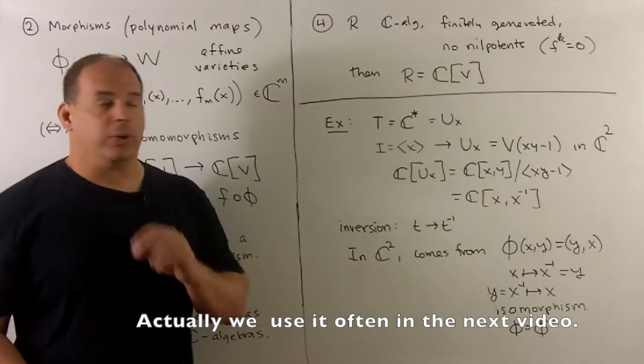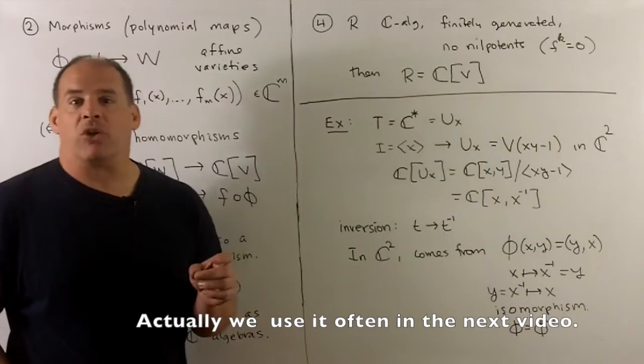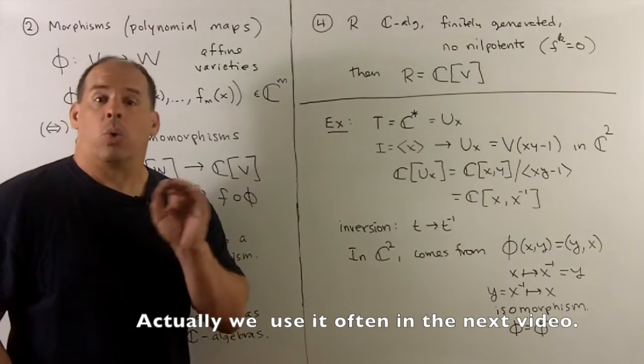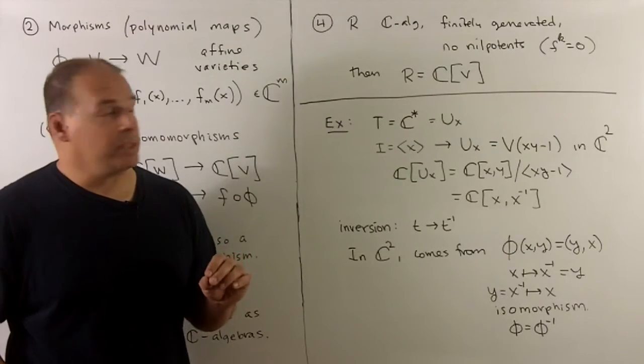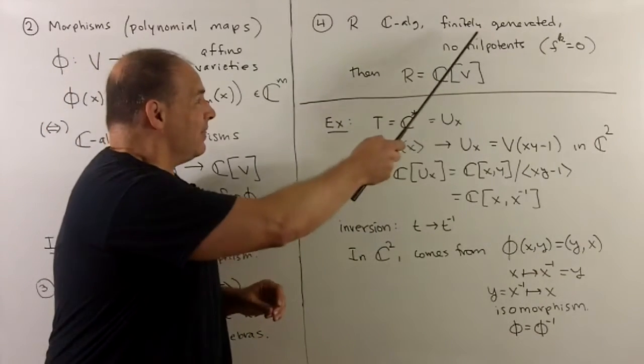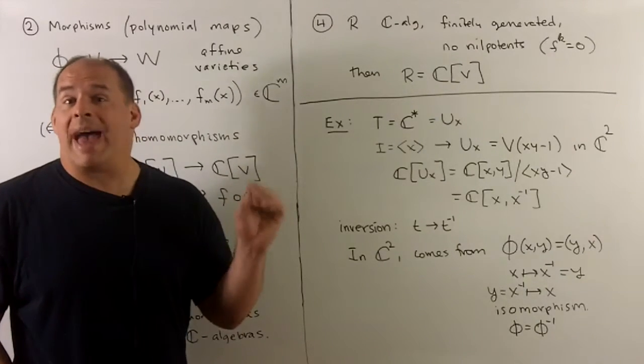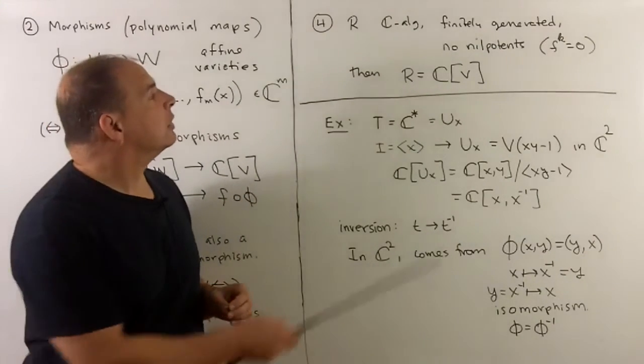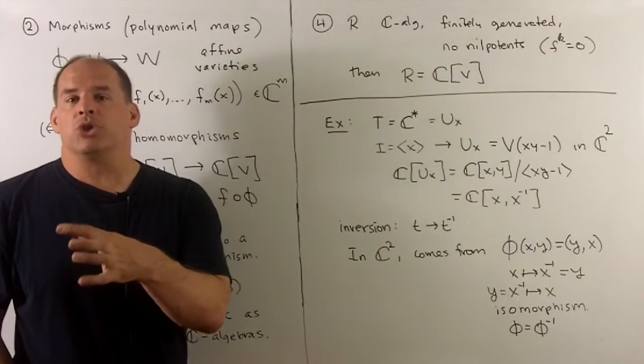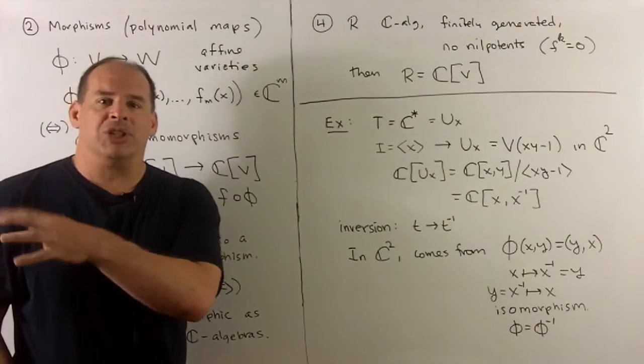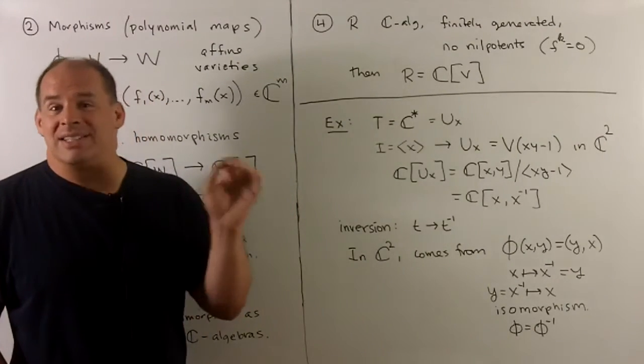Finally, we won't use this, but it's worth noting, if we have R, a C-algebra, that's finitely generated and has no nilpotents, note coordinate rings are allowed to have zero divisors, but they're not allowed to have nilpotent elements. Then, that means that R is the coordinate ring for some affine variety. So we see here, once we bring in the coordinate ring, we're able to transfer a lot of ideas from the geometry to algebra, ring theory and C-algebras.